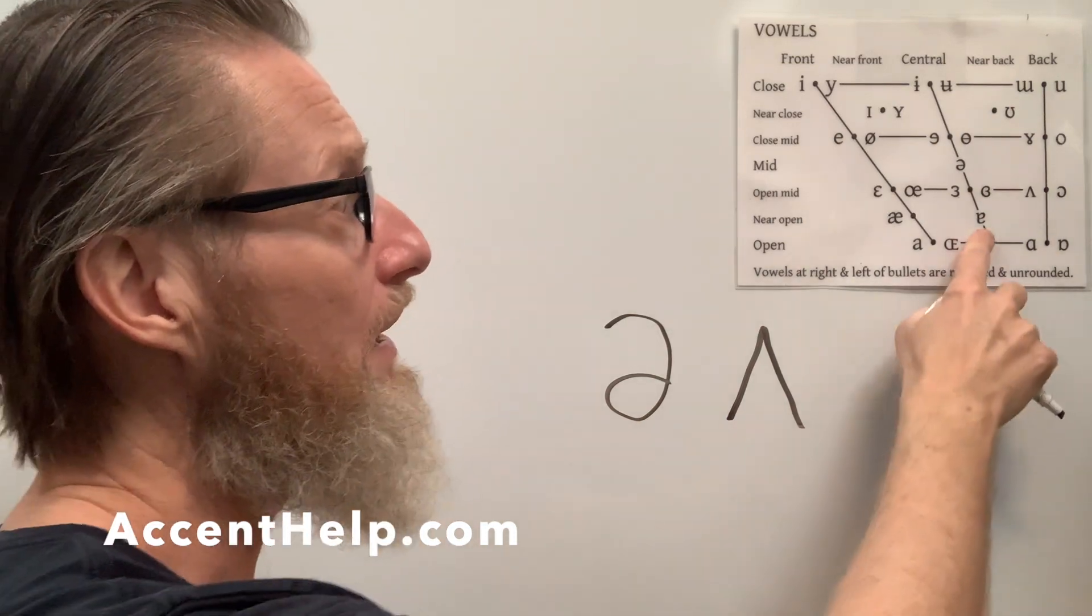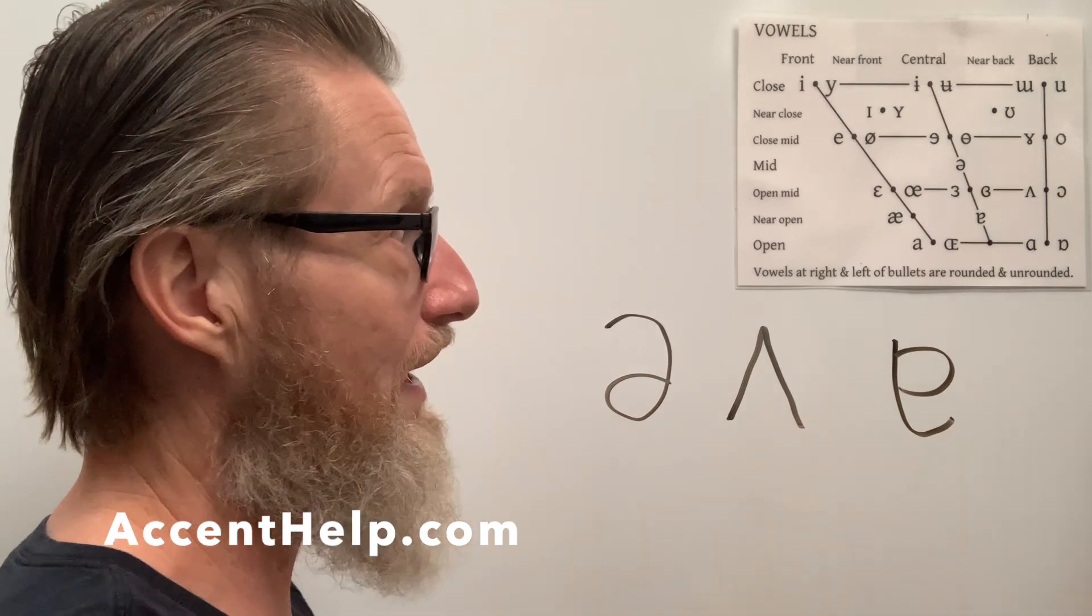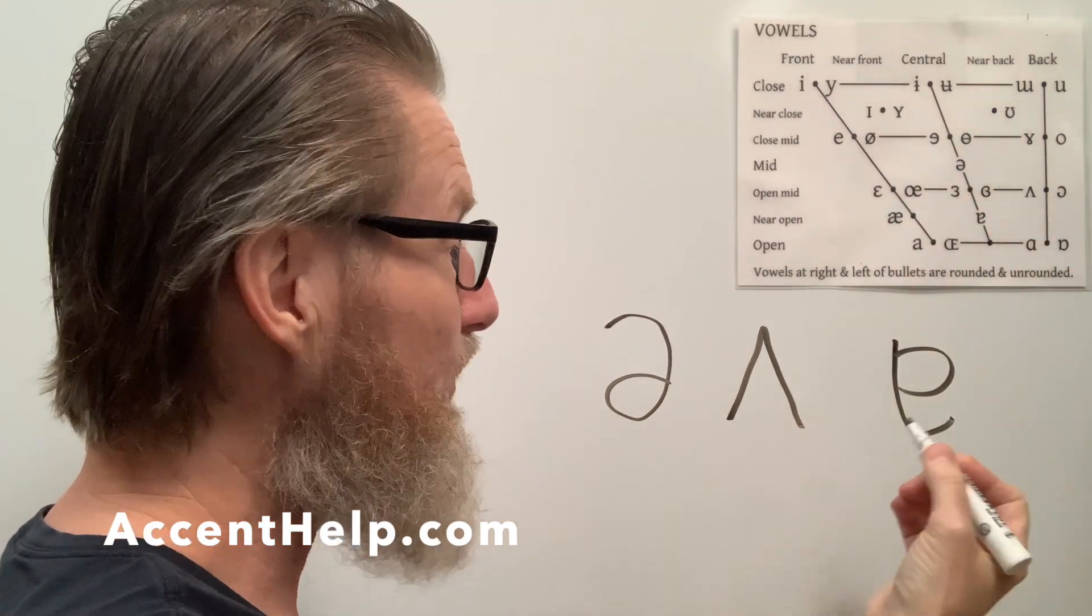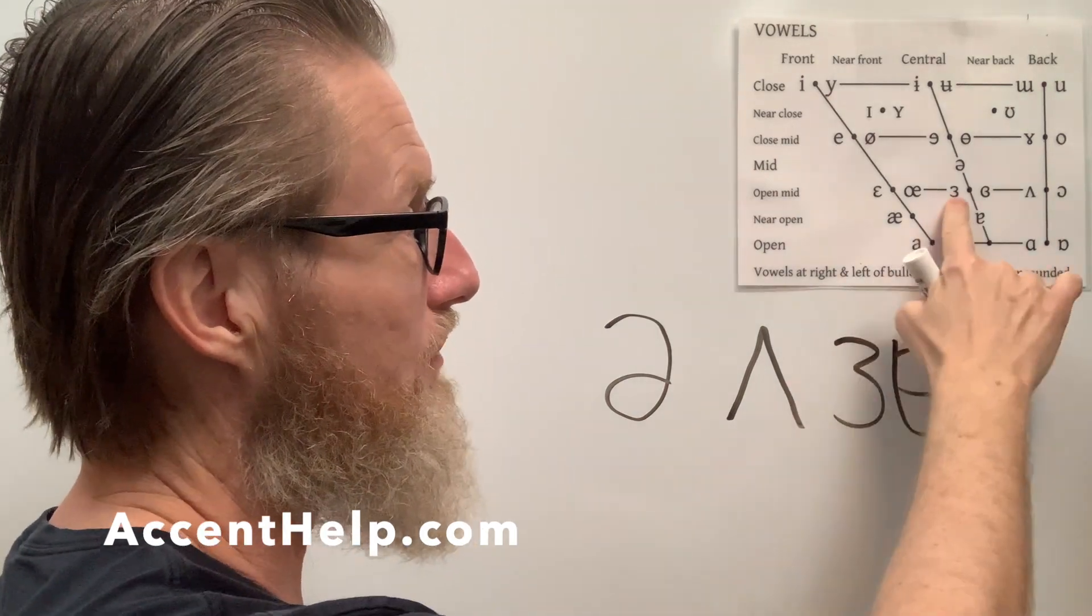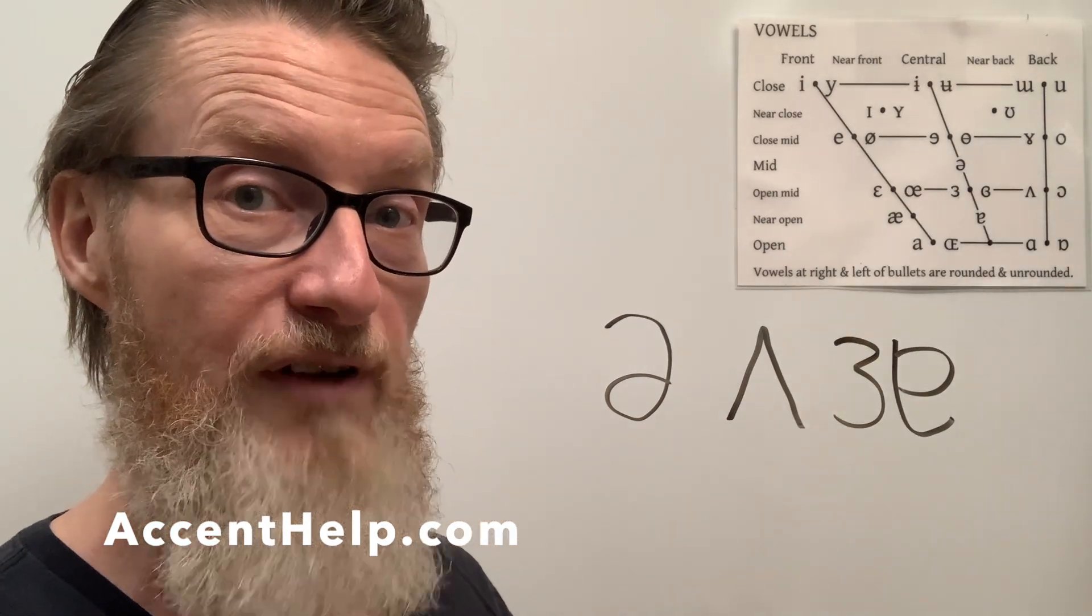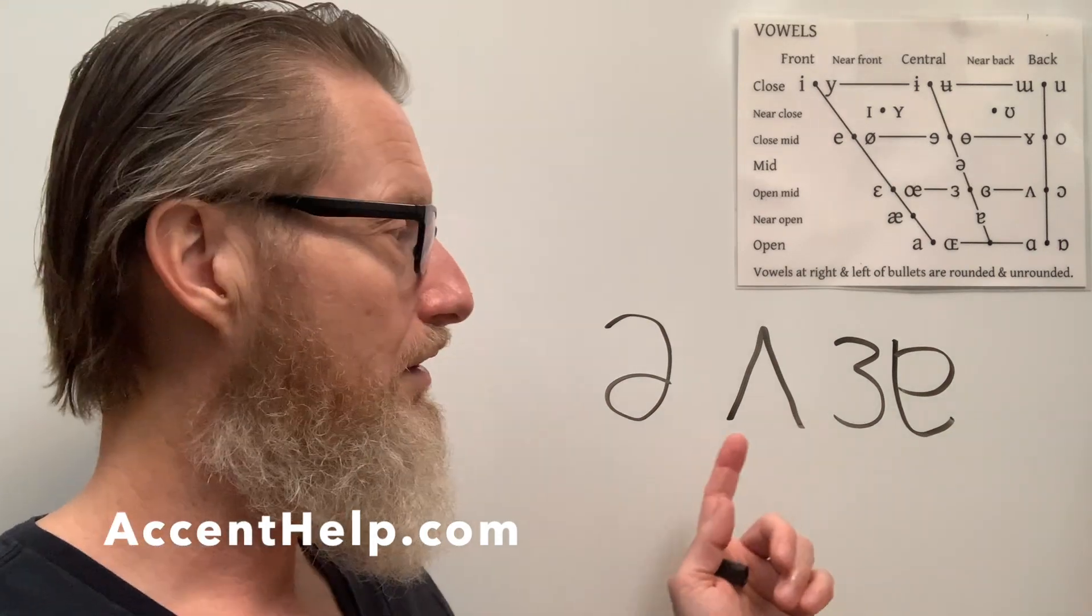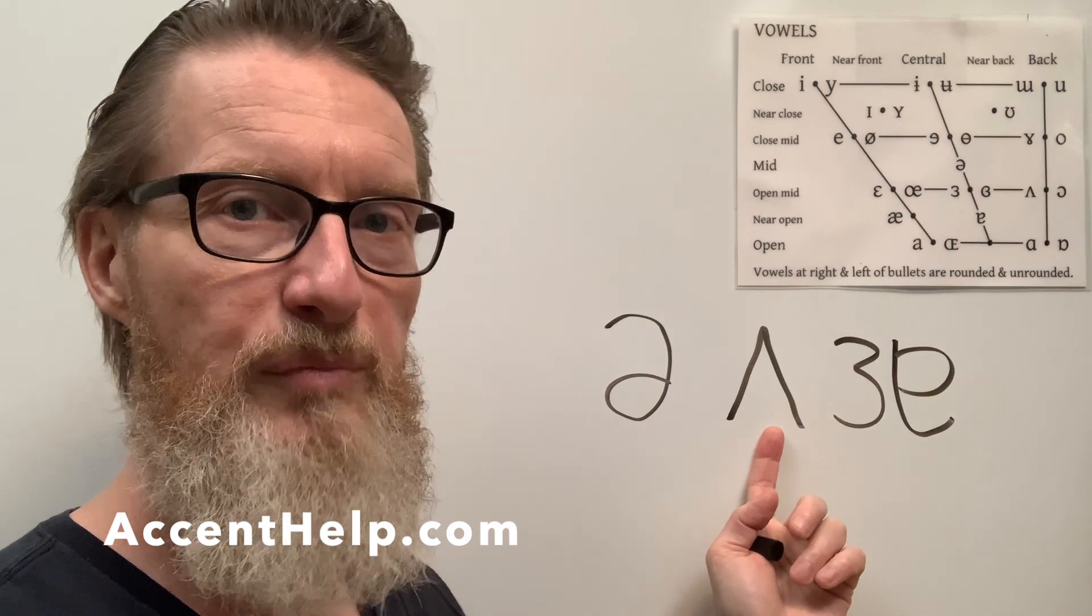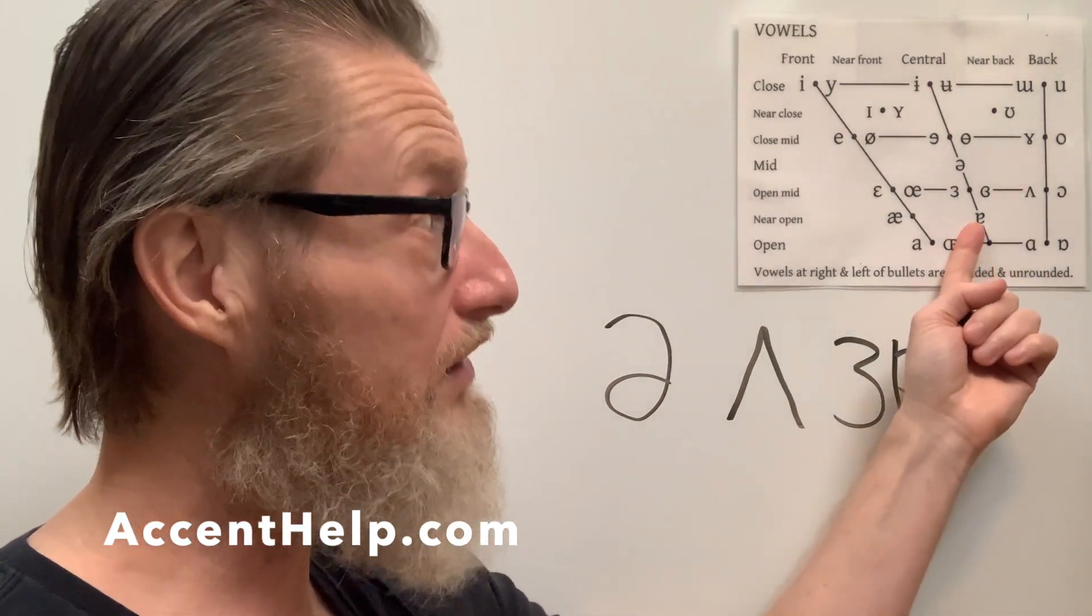Now some people like to describe it maybe as being a little bit more like this turned typed A here, that's a little bit below the schwa. Some people even think that for Americans it sounds more like the turned epsilon, which is like the nurse vowel minus the R sound: nurse, nurse, nurse, above, above. I don't think it comes quite that far forward though. Maybe it does come down to here.